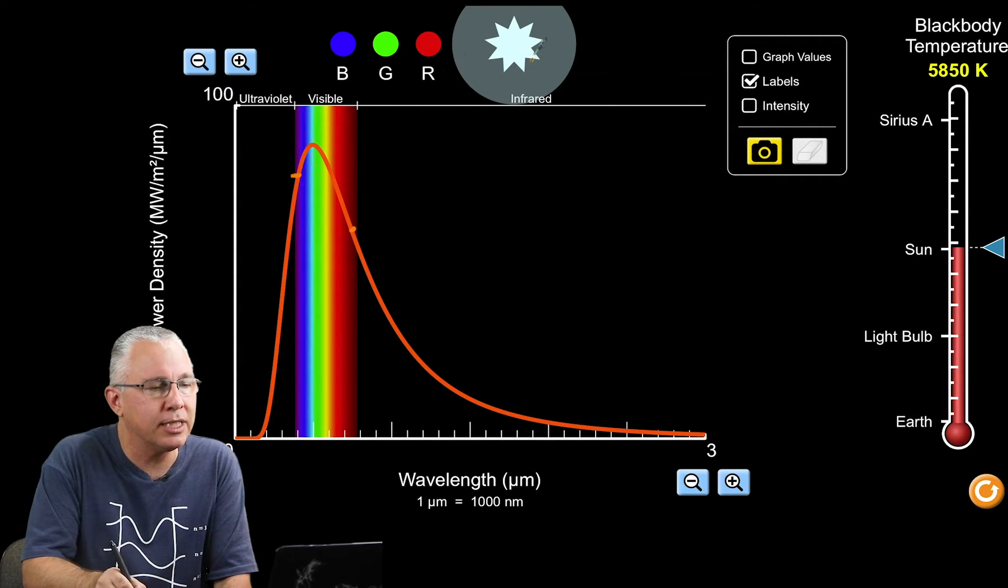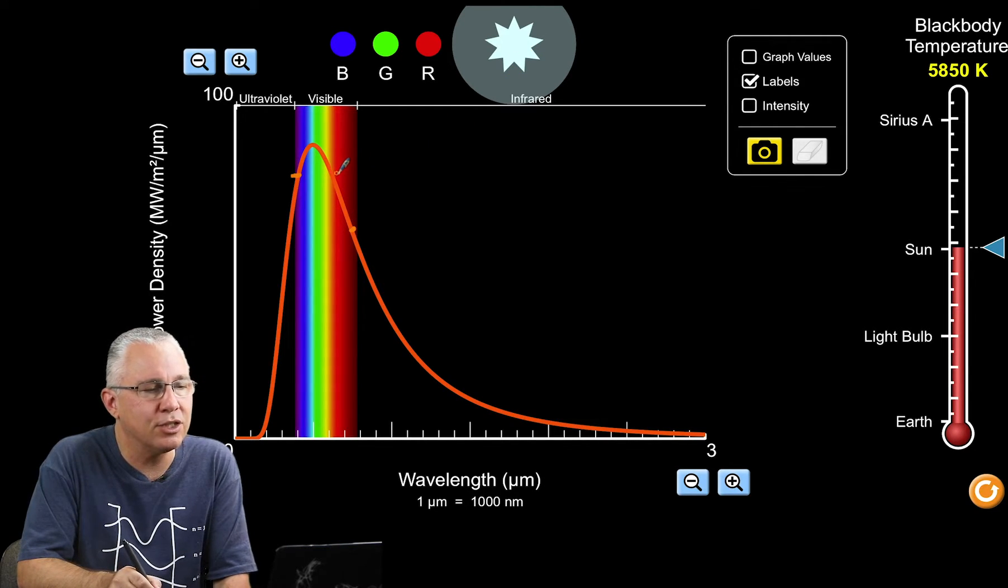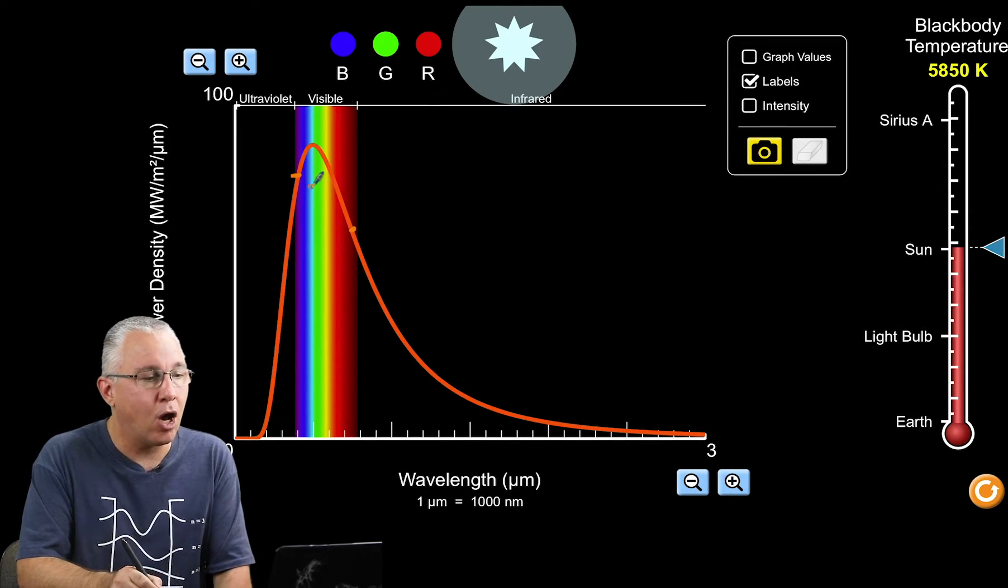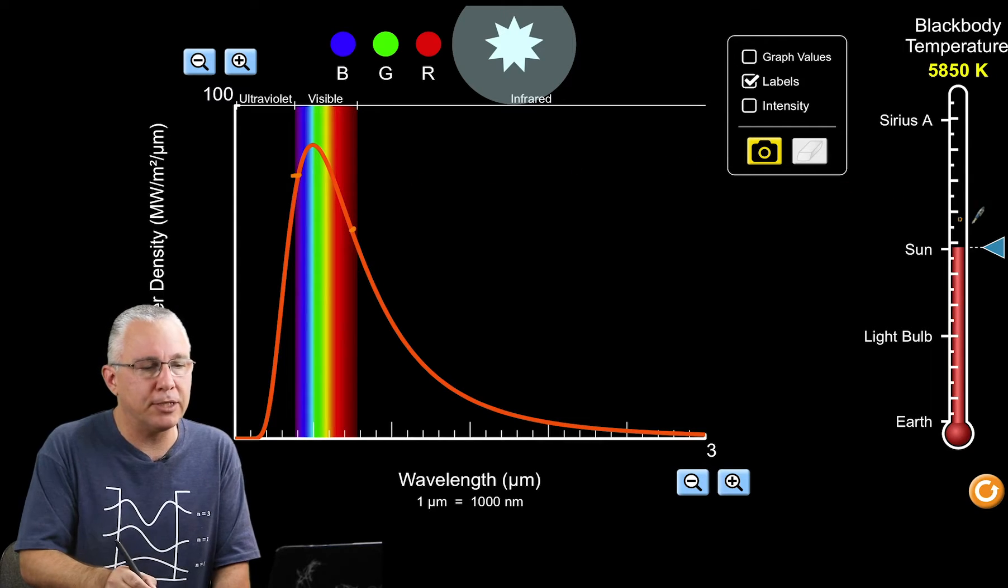What we end up seeing, as you can see in this diagram at the top, is white light because we're getting roughly equal amounts of the wavelengths in the visible spectrum.